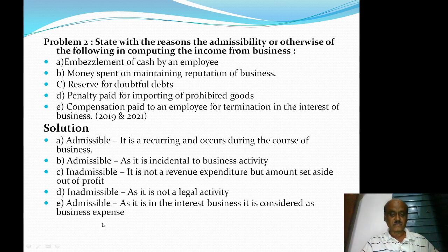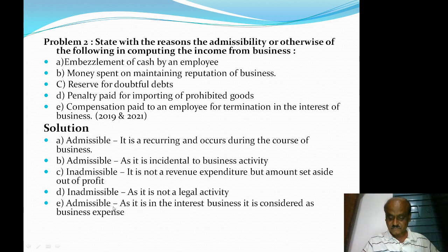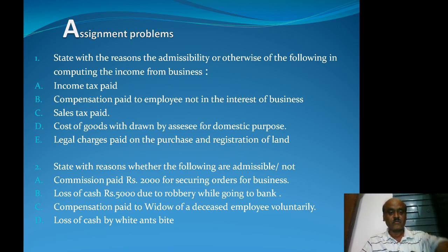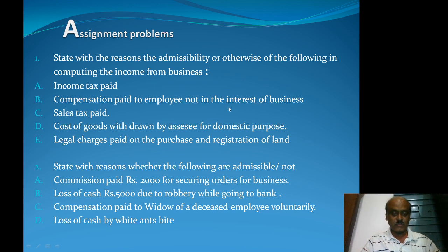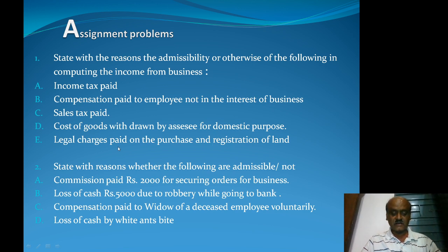Compensation paid in the interest of business is an allowable expense in computing income from business. Income tax paid is disallowable. Goods and service tax is allowable. Cost of goods drawn by the proprietor for domestic purposes is disallowable. Legal charges paid on purchase or registration of land is a capital expenditure, so it is also disallowable.